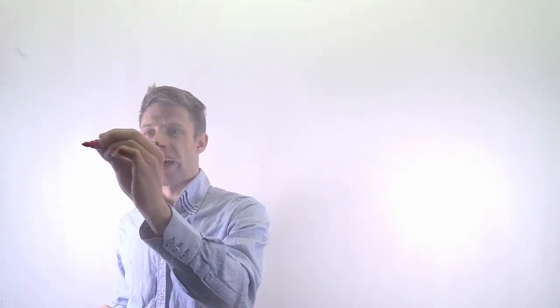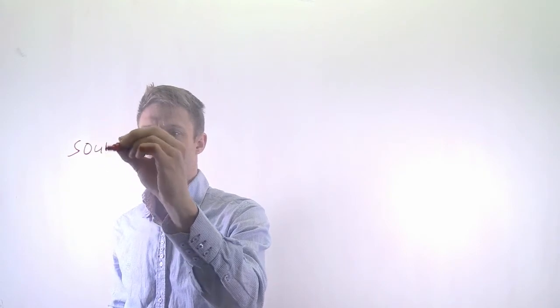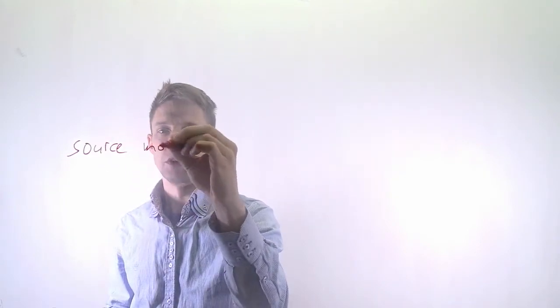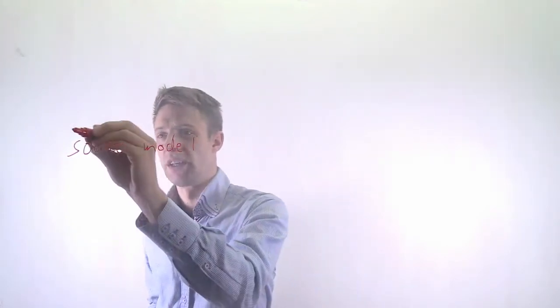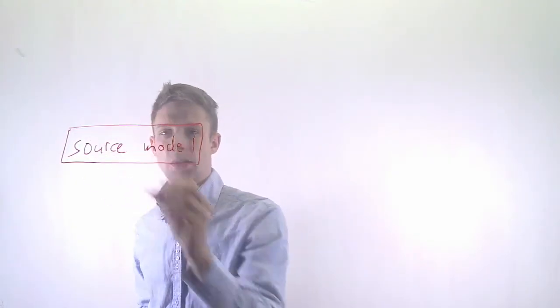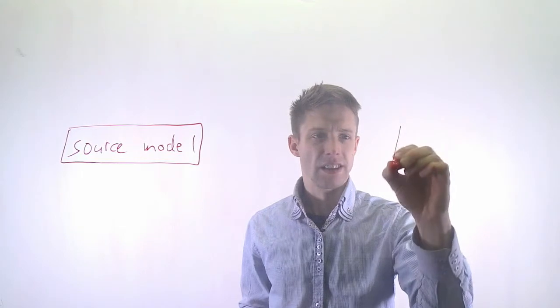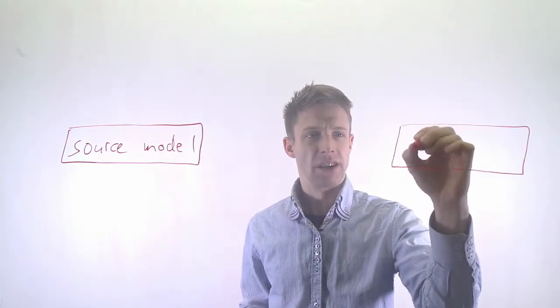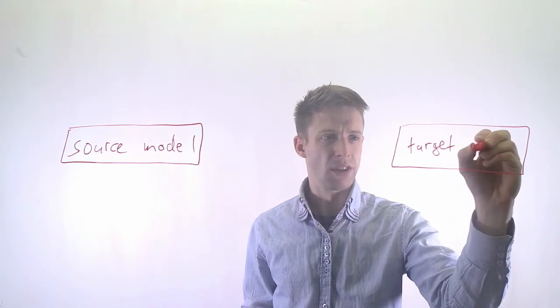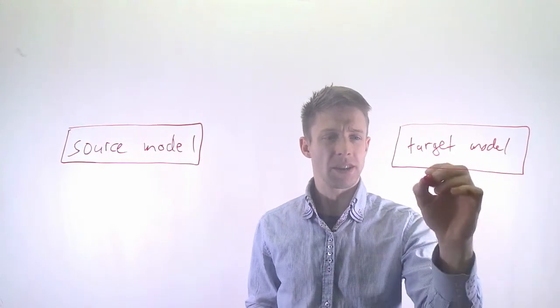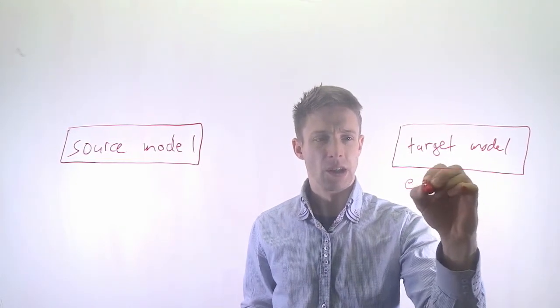So in general, what we have is a source model. That's the model we discussed all the time. We create some model, a UML model, for example, and we want to get something out of there. And what we usually call this is a target model. So we also call this a model, but this could just as well be code.